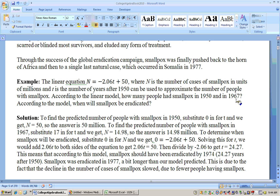Now, in 1967, that's 17 years after 1950, so we'd have to put 17 in for T. So we'd have to take negative 2.06 times 17 and then add on 50. And if you do that, I think we have that here, you'd end up with 14.98. So it would be 14.98 million people had smallpox in 1967, according to this model. So it was going down, and the plan was to eradicate smallpox, and it was.